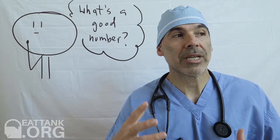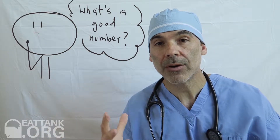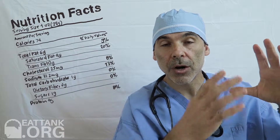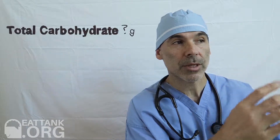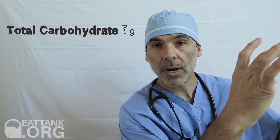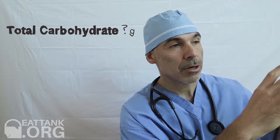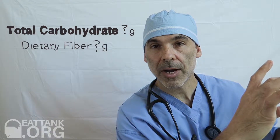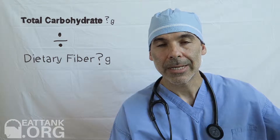How do you figure out what is a good carbohydrate to fiber ratio in your food? You look at the food label — on the nutrition label it'll say total carbohydrates in grams, and underneath that it'll say dietary fiber. Divide dietary fiber into total carbohydrates.